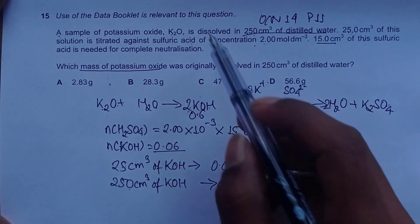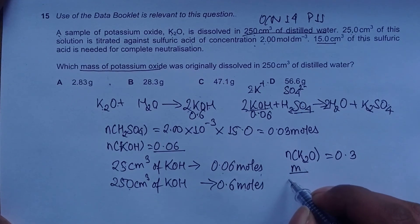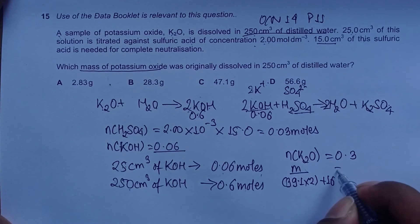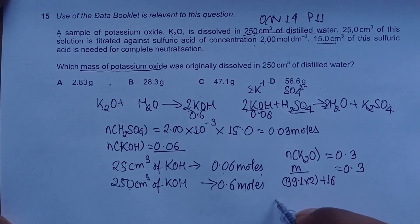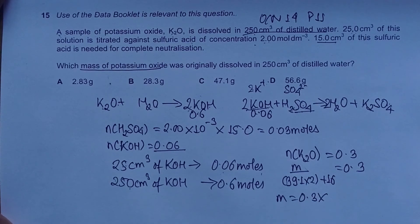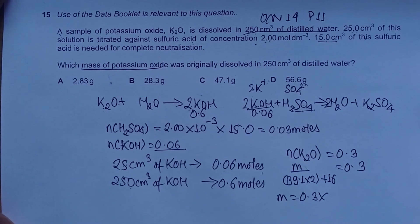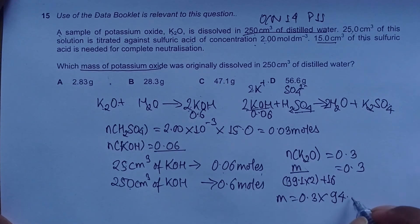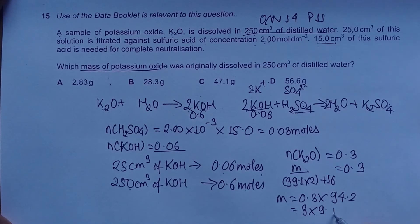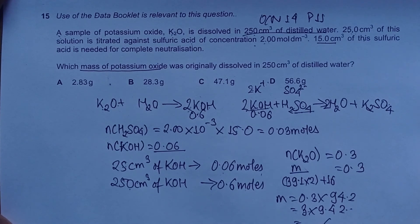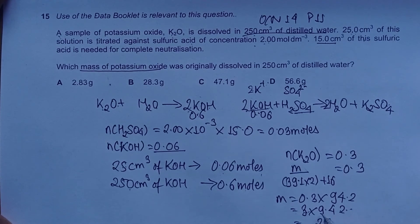Mr of K2O: potassium is 39.1, so 39.1 × 2 plus oxygen is 16 = 0.3. Mass equals 0.3 multiplied by Mr. 39.1 × 2 = 78.2 plus 16 = 94.2.